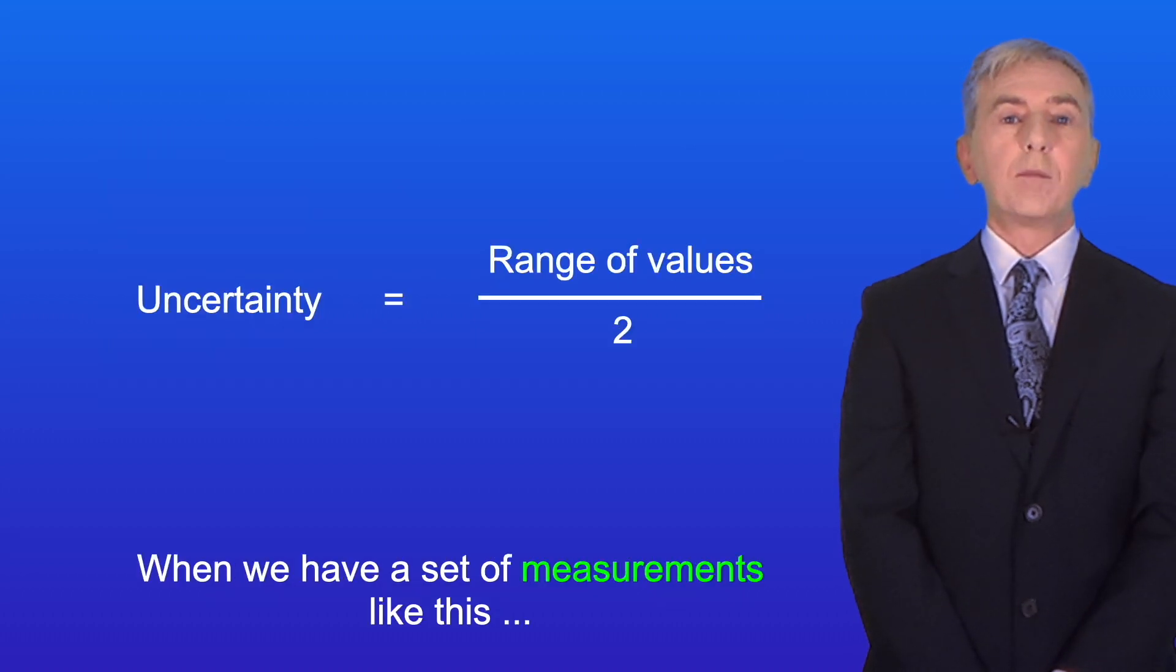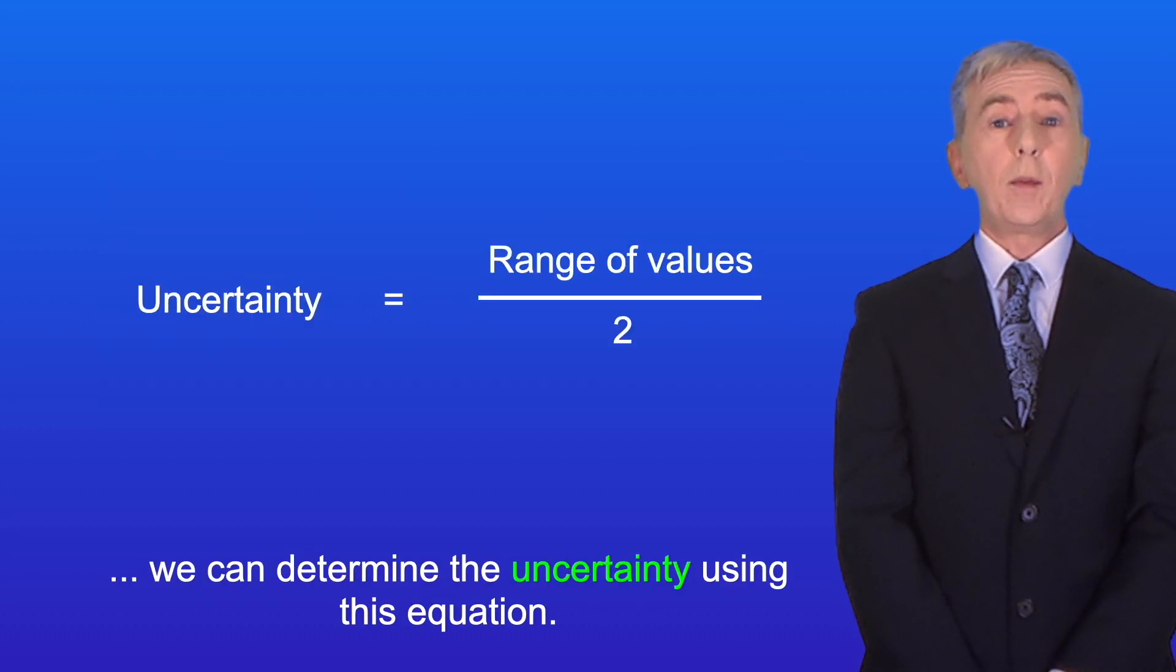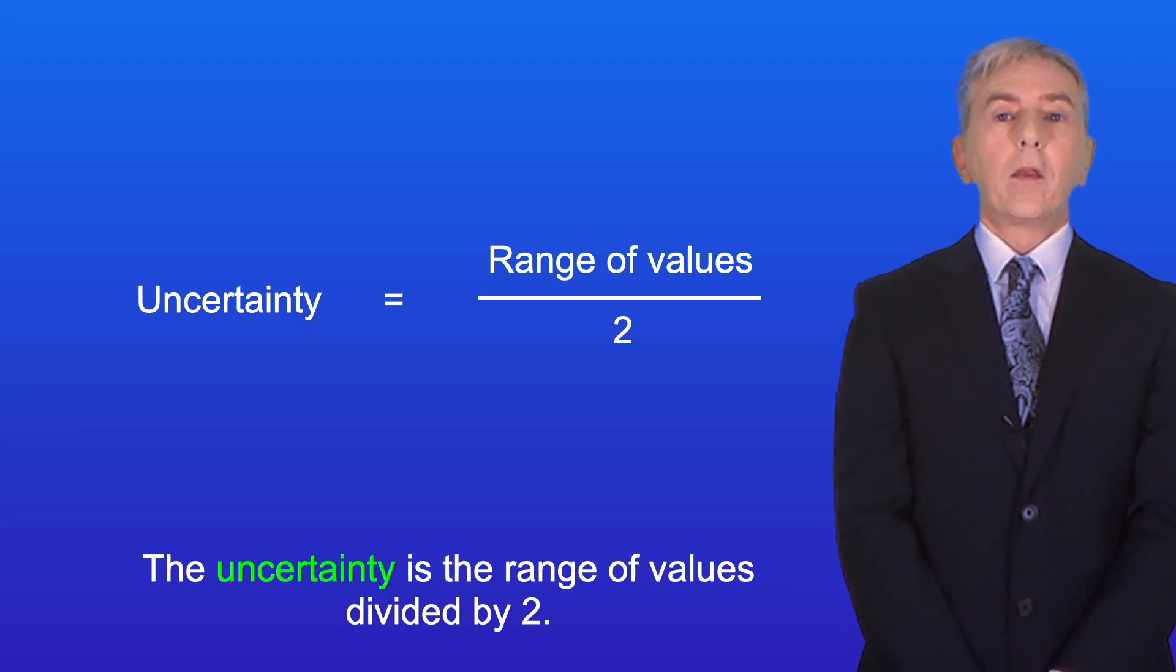Now when we have a set of measurements like this we can determine the uncertainty using this equation. The uncertainty is the range of values divided by two.